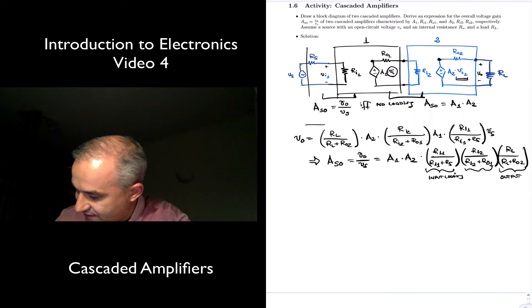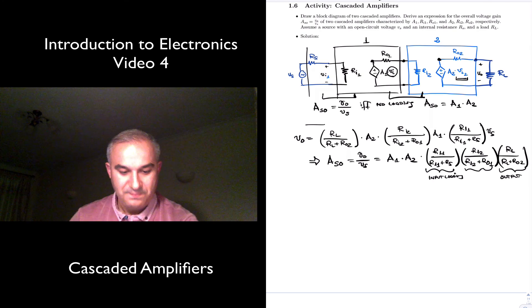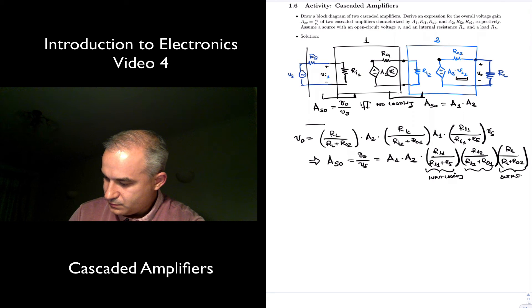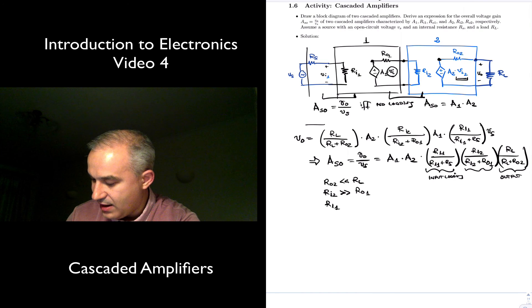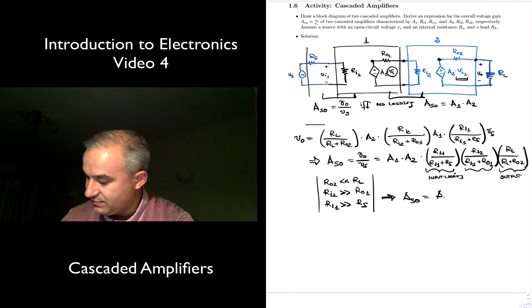And then you have the inter-cascading loading. What would we want? We would want that Ro2 is much less than RL. We would want that Ri2 is much bigger than Ro1, and we would want Ri1 much larger than Rs. If you meet these conditions, then your overall gain will be the product, A1 times A2. Otherwise this is less than 1, this is less than 1, and this is less than 1.